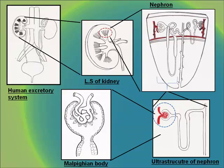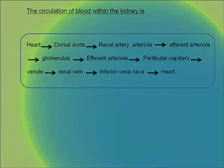Diagrams of the human excretory system, longitudinal section of the kidney, nephron, ultrastructure of nephron and Malpighian body are shown. The circulation of blood within the kidney follows this path: heart to the dorsal aorta, renal artery, arteriole, afferent arteriole, glomerulus, efferent arteriole, peritubular capillary, venule, renal vein, inferior vena cava and back to the heart.